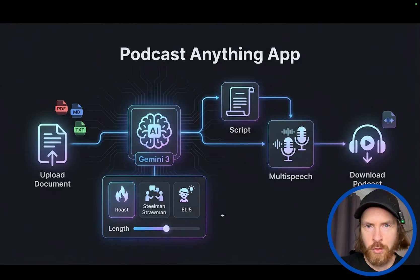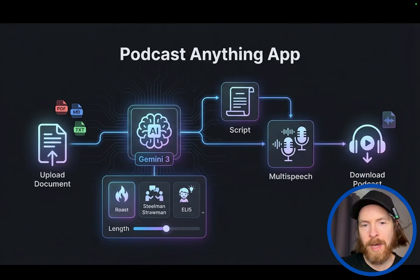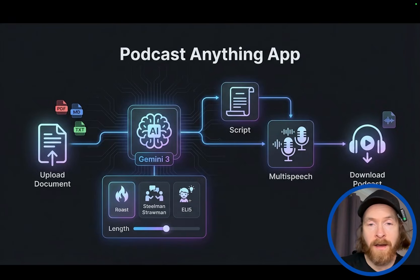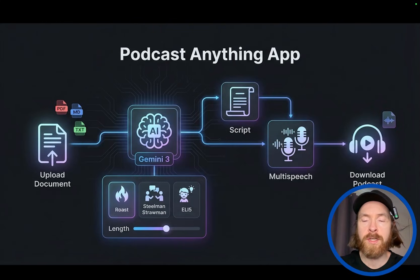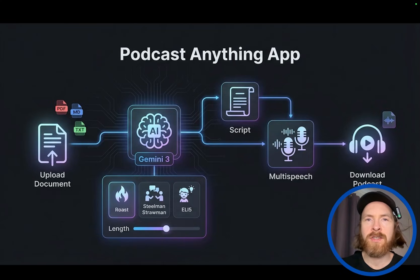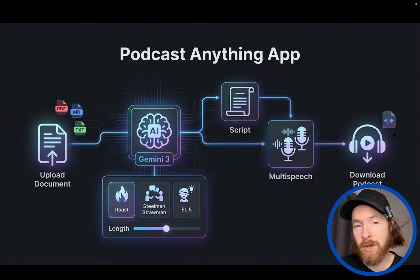We want the app to be like a podcast anything, and for that we're going to use multi-speech. We also want to be able to set some parameters in the app — this could be how long it's going to be, whether it's going to be a style of roasting, steelman, strawman, or explain it like a fifth grader. Basically what Gemini is going to do is write a script for the multi-speech, and we're going to send this to the multi-speech API from Gemini. What we get back is a podcast episode with two different speakers. And then you can just download the episode and listen to it wherever you want.